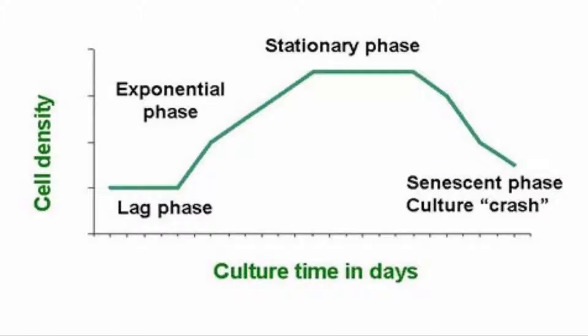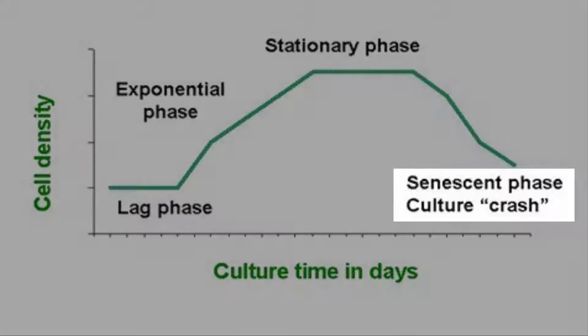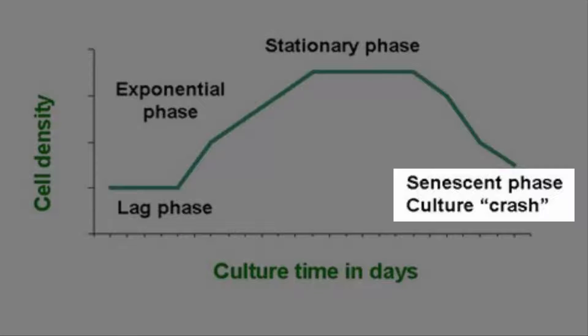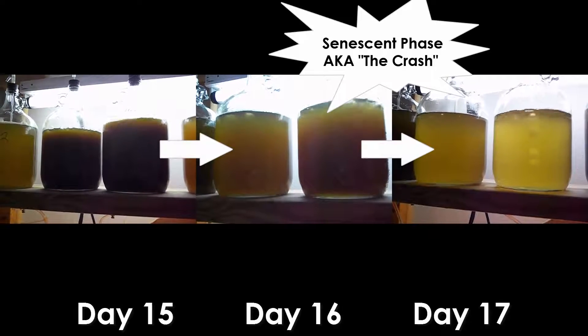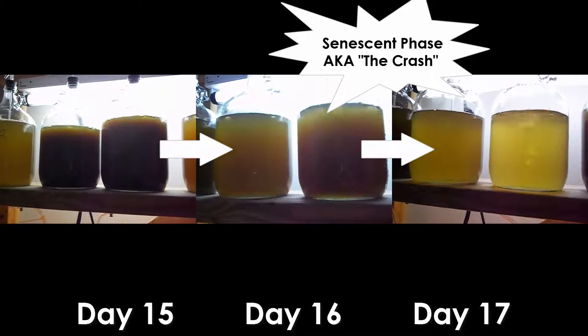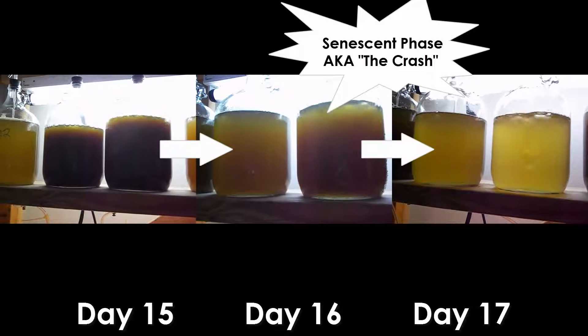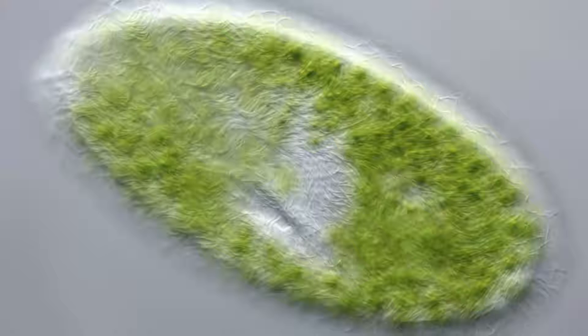Finally, when nutrients are exhausted, light becomes increasingly limited, and CO2 becomes exhausted — resulting in elevated pH, which may be greater than 8.5 — the algal cells begin to die and the culture goes into its senescent phase. Culturists call it the crash. At that point, the phytoplankton culture rarely recovers, and often becomes contaminated with bacteria and microscopic zooplanktors such as ciliates.